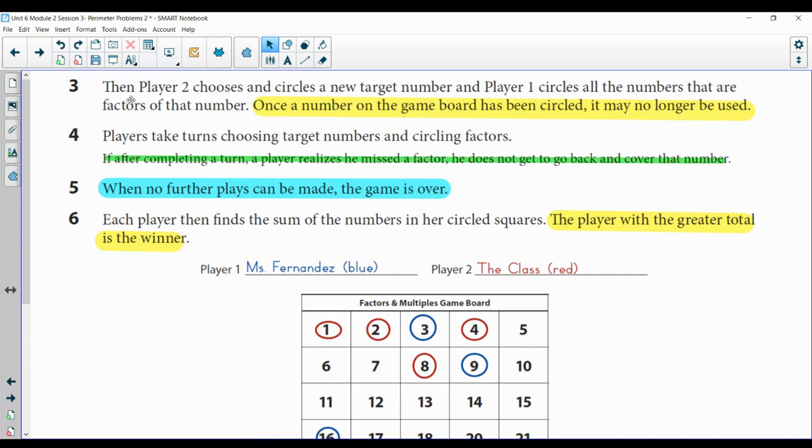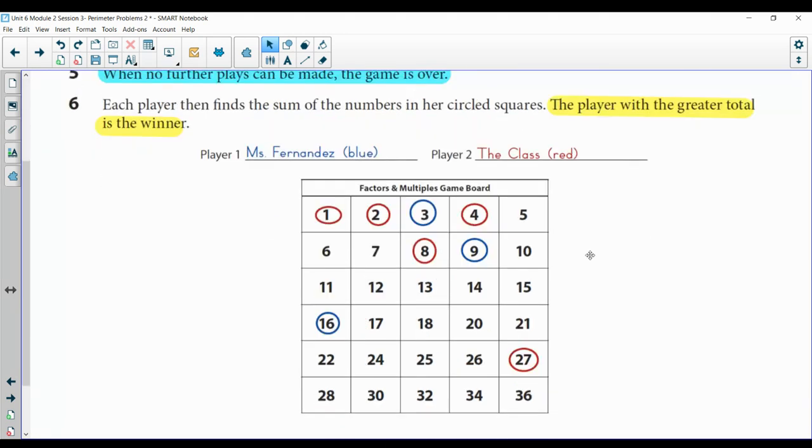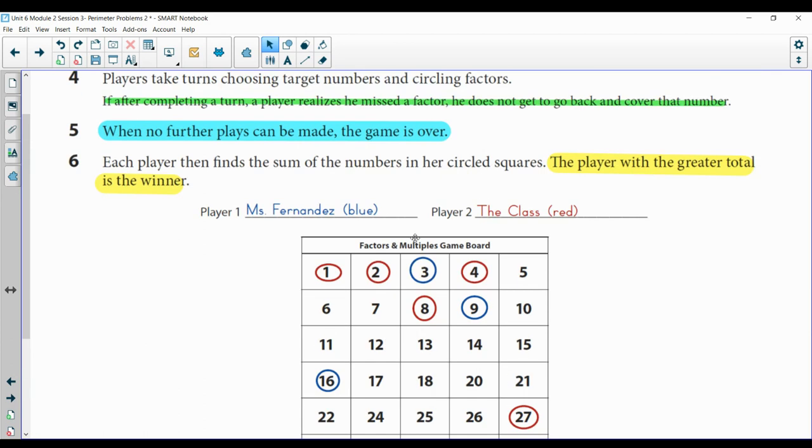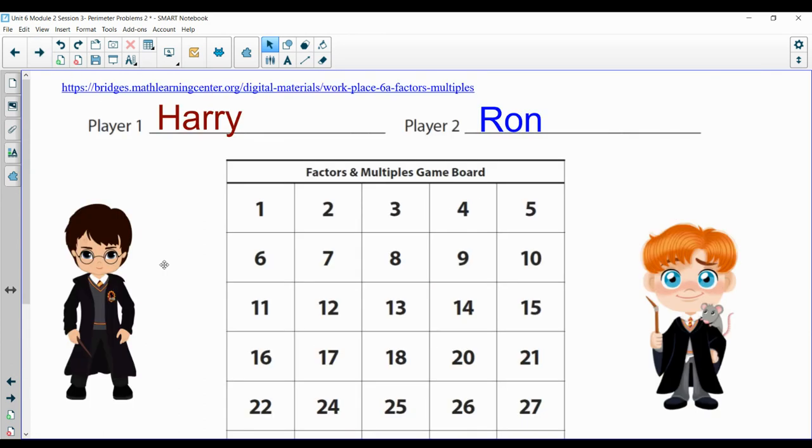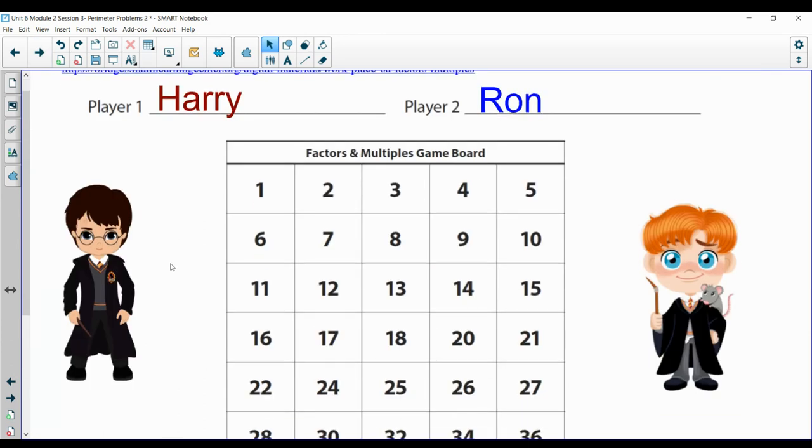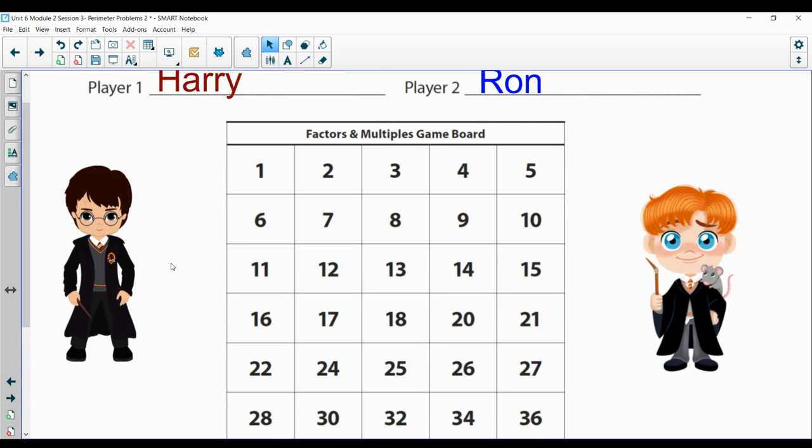After a complete turn, if a player realizes he missed a factor, he cannot go back. So you just keep going back and forth there until you cannot play anymore. No further play could be done. And then whoever has the most points wins. This is the winner. So let's just do a really quick one. I'm not going to go too far into this.